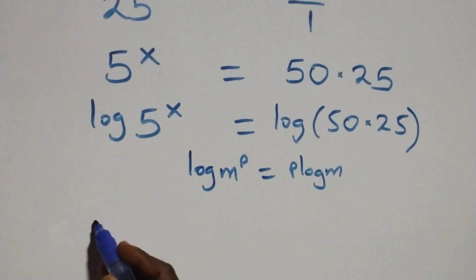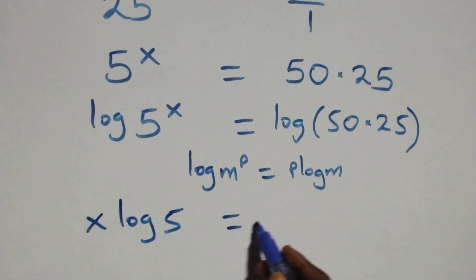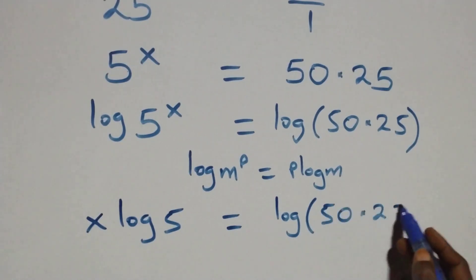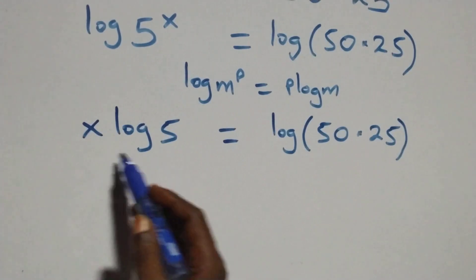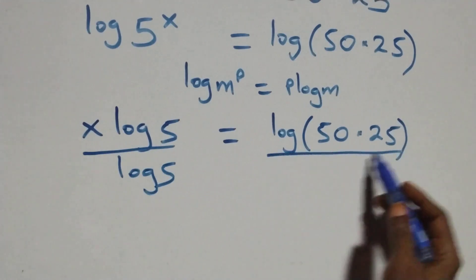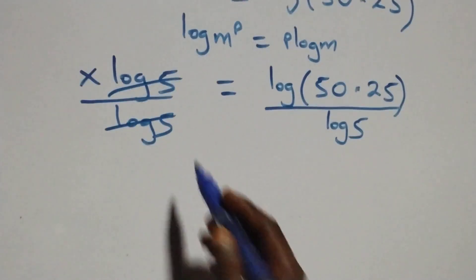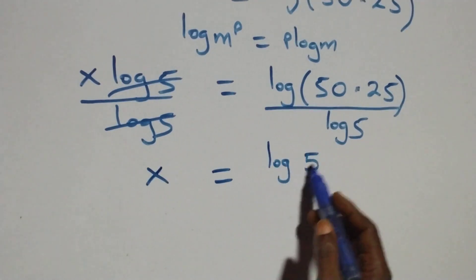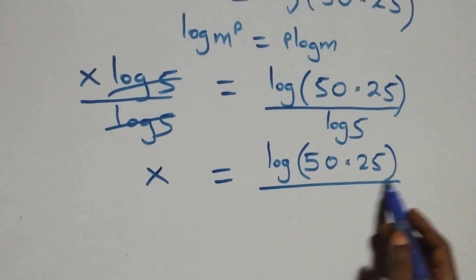So what we have becomes x log 5 equals to log of 50 times 25. From here we divide both sides by log 5. Log 5 cancels each other, and we have x equals to log of 50 times 25 over log 5.